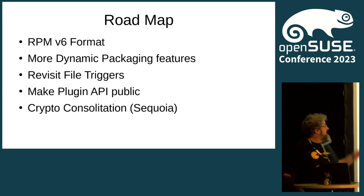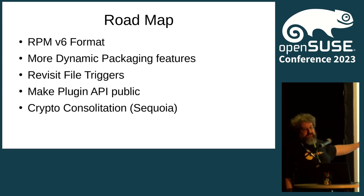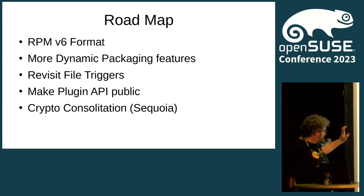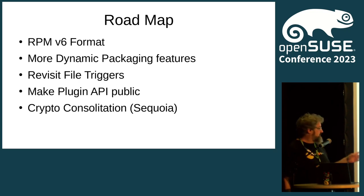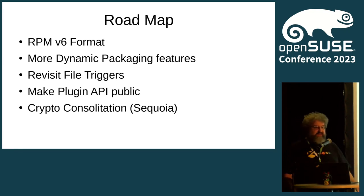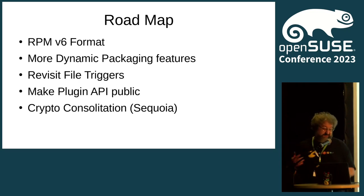So where are we time-wise? Roadmap — what's next? We are doing an RPM v6 format — there's another slide on that. File triggers are on the list of being looked at again; they still have some issues that I'm not fully understanding, but someone needs to look into that. There are plans to finally make the plugin API public. RPM has plugins internally — stuff like SELinux and the reboot-inhibit functionality is all done with plugins — and it's currently in-tree and private, but the goal is to get it public. And there's more work on the crypto consolidation front — something we've done in the last release, which we snuck into Fedora without anyone looking.